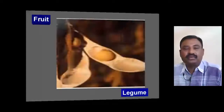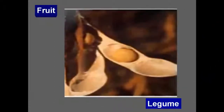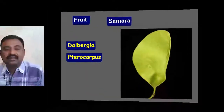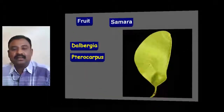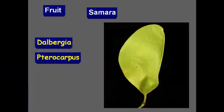The legume is the characteristic fruit of Fabaceae. In Dalbergia and Pterocarpus, the fruit is a samara — a winged, dry, indehiscent fruit is called a samara.